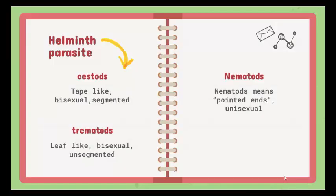Now we are going to talk about a little bit of structure. Cestodes are tape-like and they are bisexual — they are hermaphrodites, meaning male and female parts are found in one organism. On the other hand, trematodes are leaf-like. If you look at their structure, they look like a leaf. They are bisexual as well and they are unsegmented.